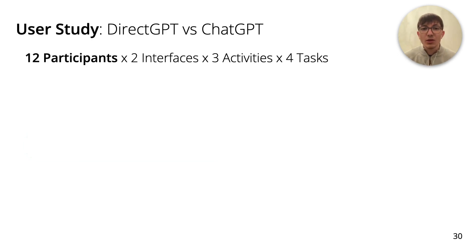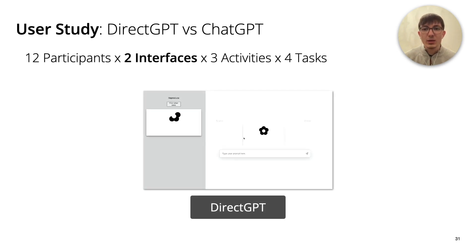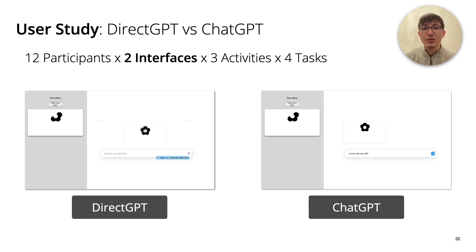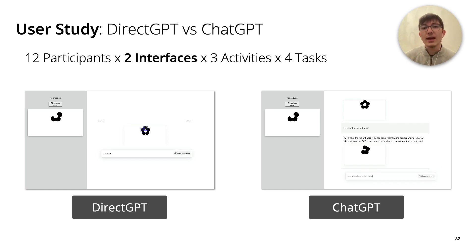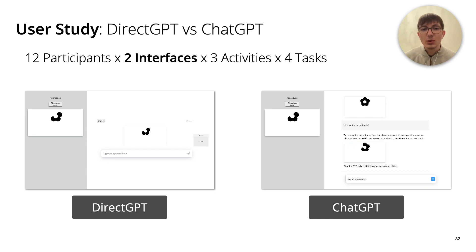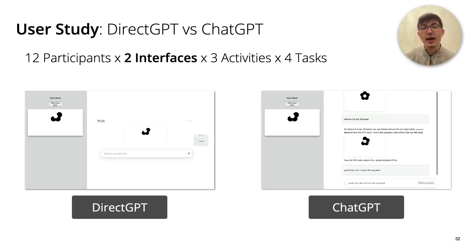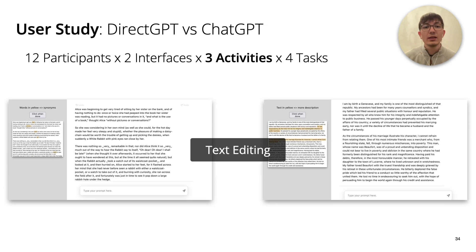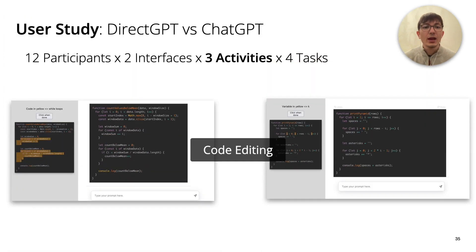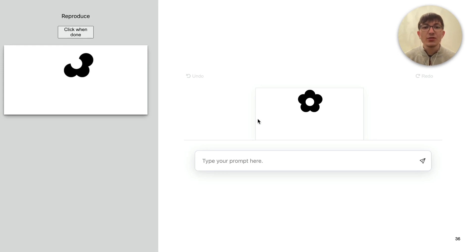Now that we developed a working prototype implementing direct manipulation principles, we wondered if these principles were actually beneficial. Specifically, we conducted an experiment with 12 participants to compare DirectGPT with ChatGPT, and measured the effect of direct manipulation principles to convey intent, control large language models, recover from mistakes, and reuse prompts. Participants were asked to go through three activities with both interfaces: reproducing an image, editing literary text, and editing JavaScript computer code. For each activity, participants completed four tasks spanning different levels of difficulty using the direct manipulation features such as adding, removing, and transforming content.